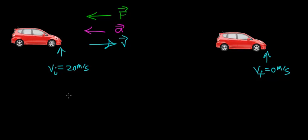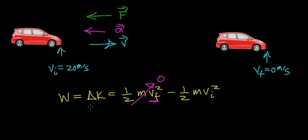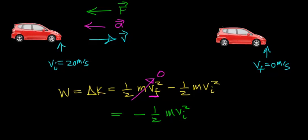We're going to apply the work kinetic energy theorem to this case to figure out how much work is required to slow this car down. The work equals the change in kinetic energy, which equals one-half the object's mass times the final velocity squared minus one-half the object's mass times the initial velocity squared. In this case, the final velocity is 0, so that entire term becomes zero, and we can rewrite the change in kinetic energy as minus one-half the mass of the car times the initial velocity squared.